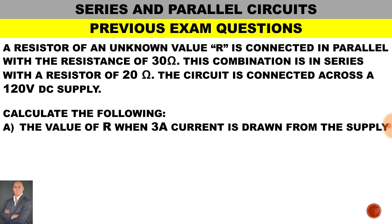Here we have a previous exam-type question for a series and parallel combination. A resistor of unknown value R is connected in parallel with a resistance of 30 ohms. This combination is in series with a resistor of 20 ohms. The circuit is connected across a 120-volt DC supply. Calculate the value of R when 3 amps of current is drawn from the supply.